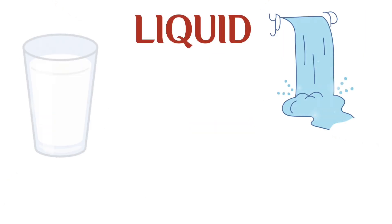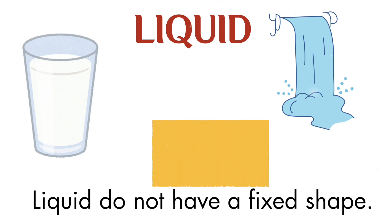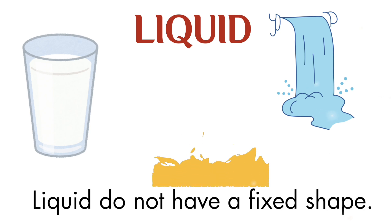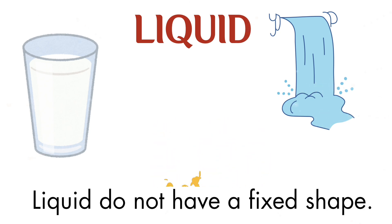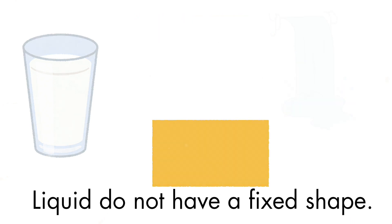Liquid. Liquids do not have a fixed shape. When a liquid is poured from a glass into a bottle or a jar, the liquid takes the shape of the container into which it is poured. For example, water and juice take the shape of their container.